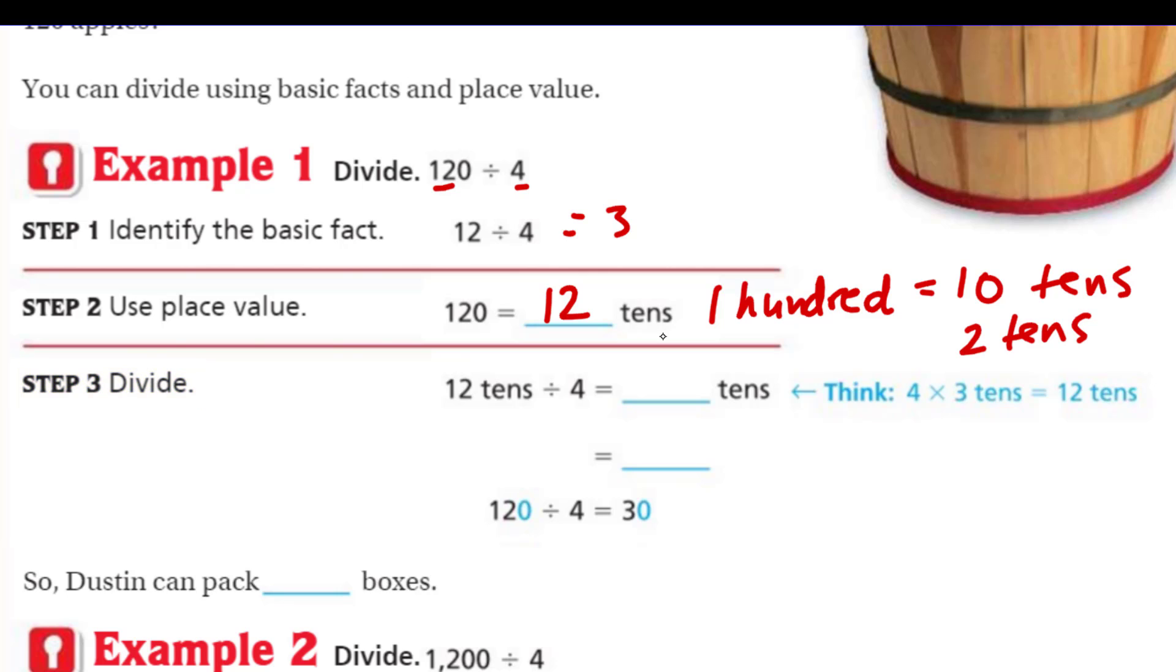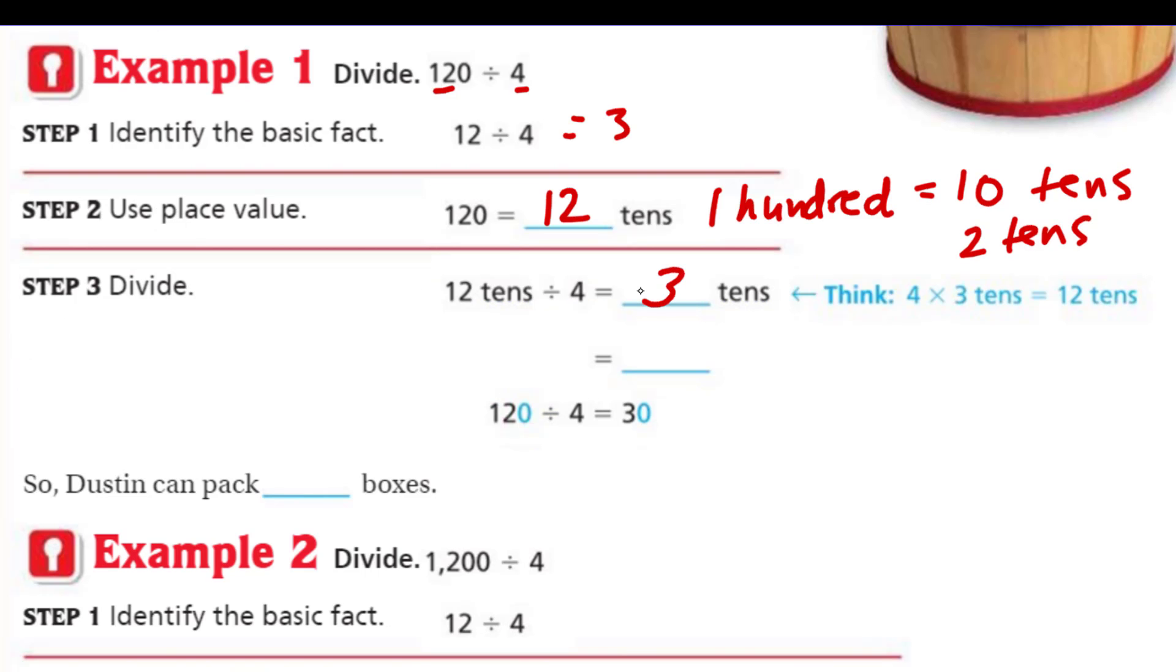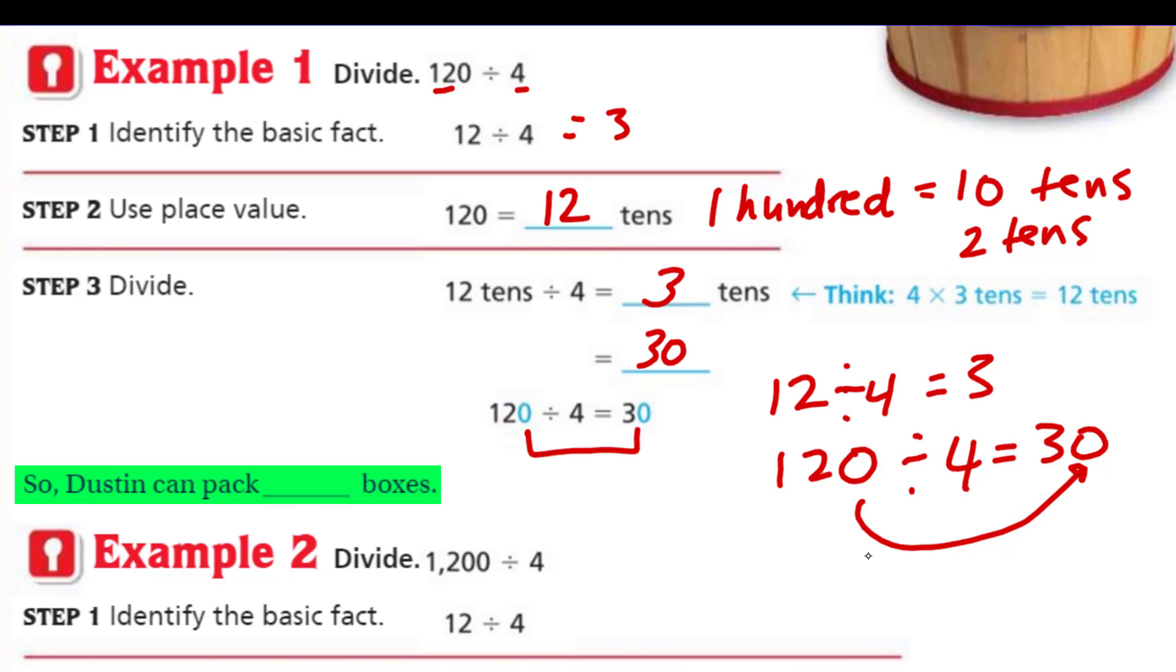Step three. Divide. So now we're doing the division part. We have 12 tens divided by four is equal to three tens. Too easy. So 12 tens divided by four is equal to three tens, which is equal to 30 because three tens is like 10, 10, 10. And look what they did there. They're just showing you that was just a power of 10. 120 divided by four is equal to 30. That power of 10 found his way over there on the end. I love patterns. So Dustin can pack 30 boxes.